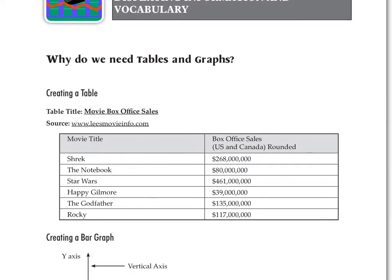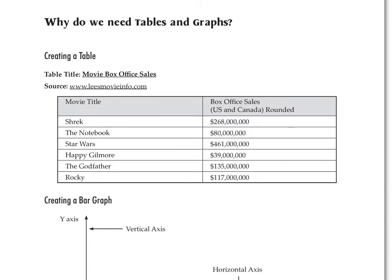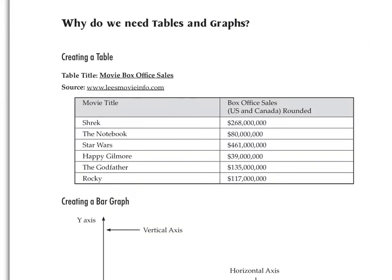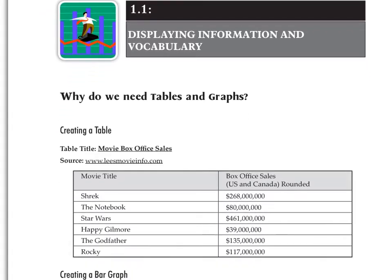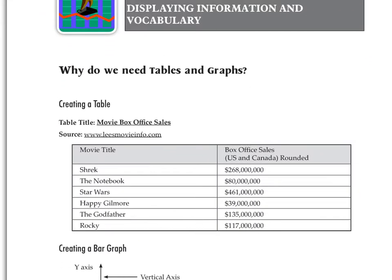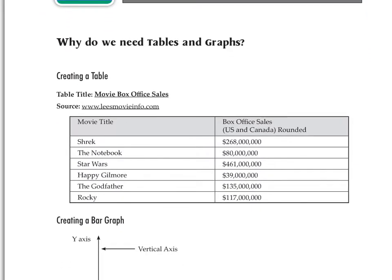So we're going to talk about tables and graphs right off the bat. If you have the workbook, you can find it at the beginning of the book. This is what we call a table here. A table is just a condensed way to write information down. It just makes it easier to understand the information instead of writing in a paragraph.